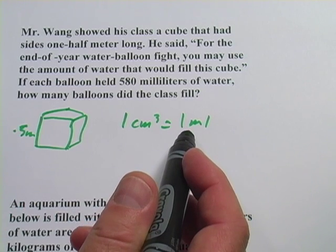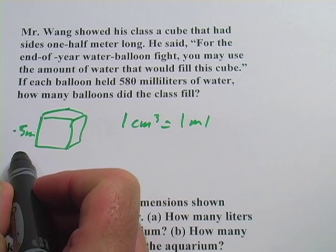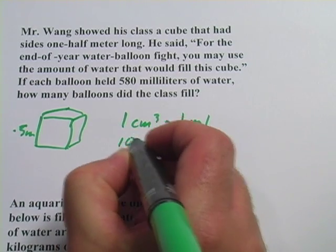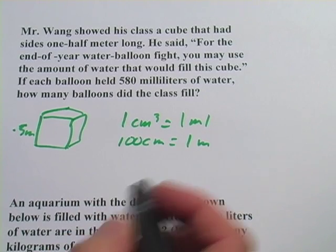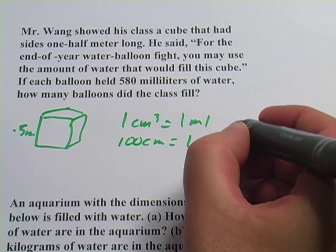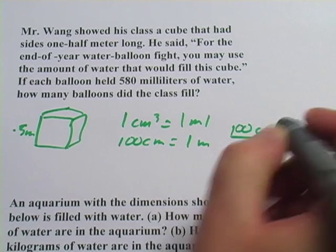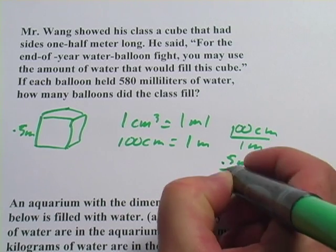So what we want to do is figure out how many cubic centimeters are in this cube, and that's how many milliliters will be in the cube. What I'm going to do first is convert this 0.5 meters into centimeters. And for that, I need to know this fact: 100 centimeters are in one meter. And from that, I could make a conversion factor, 100 centimeters per one meter.